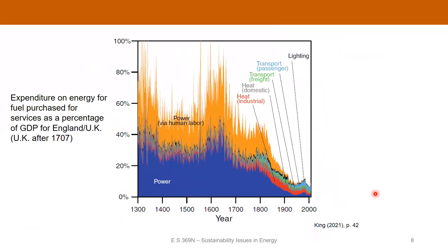Here's similar data — this is expenditures on energy for fuel purchased for services, as a percentage of GDP. So this is what you're purchasing the fuel for, not necessarily just what the fuel is. Going back to the late medieval period and the Renaissance, a lot of energy was being purchased to power human labor — which is really significant. But again, starting at the Industrial Revolution, you can see that particular category declines substantially. Even though we've got more categories of energy being purchased, the overall expenditures as a percentage of GDP are a lot lower. Again, there's that 1769 James Watt date.